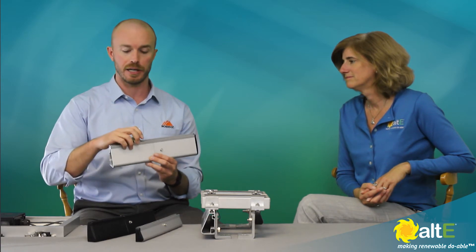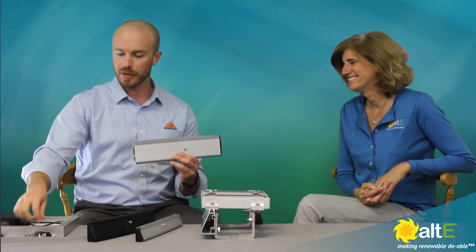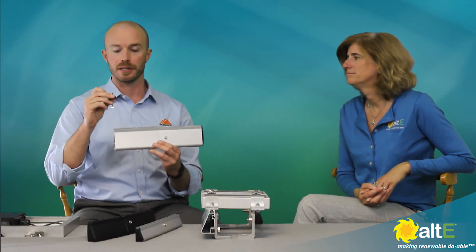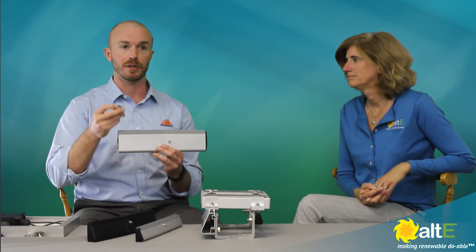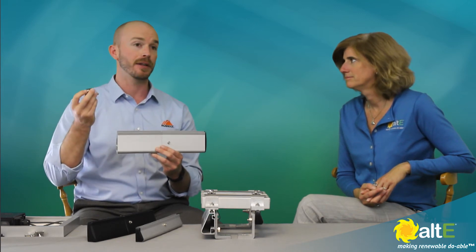So IronRidge, one of the things that originally endeared us to installers was we came up with a way to put everything into one product so you'd have your grounding through your mid clamp. You already have to use this to attach the module to the rail. Why not have grounding in here too?